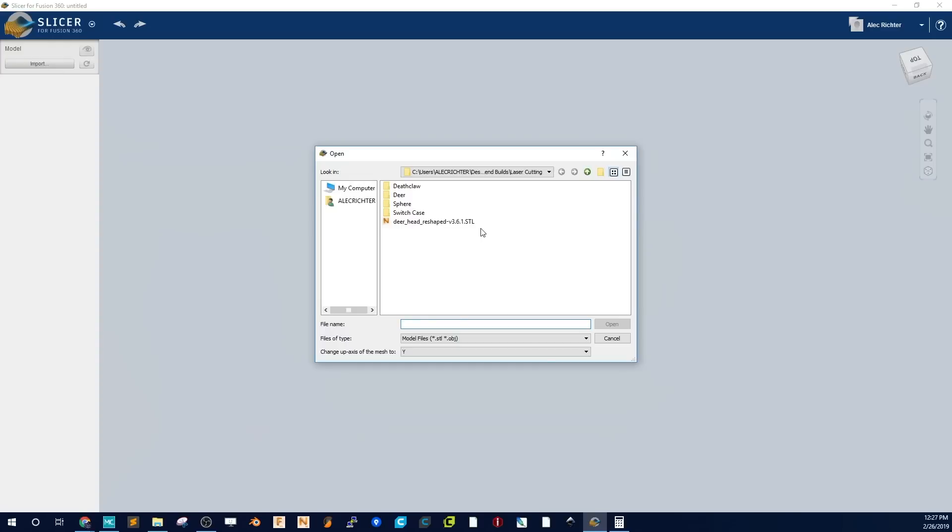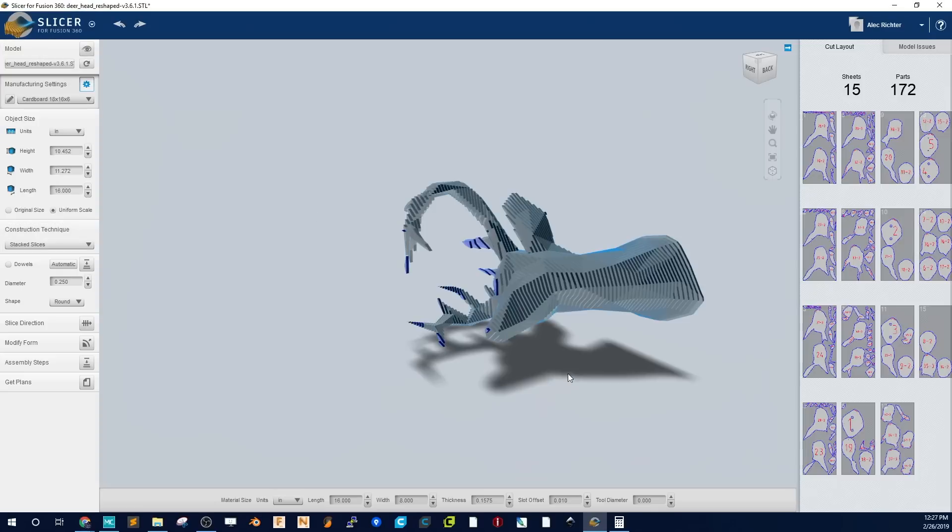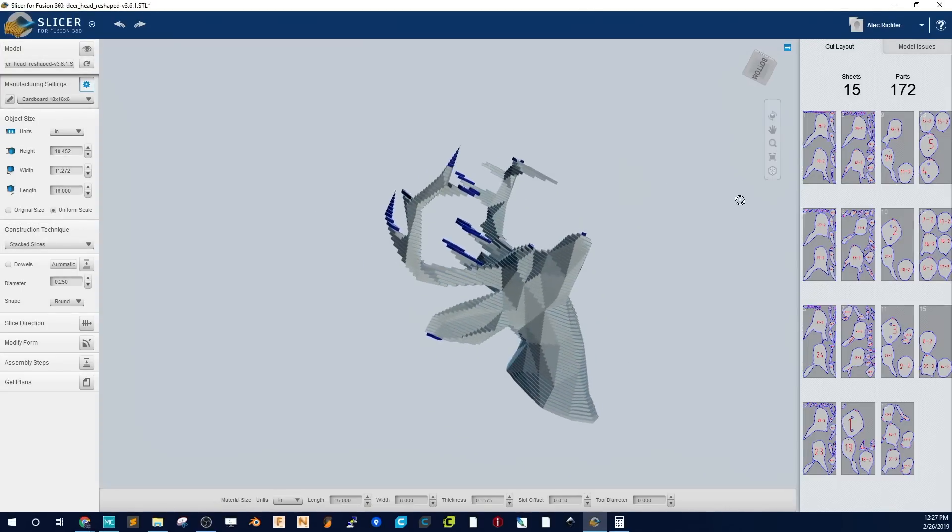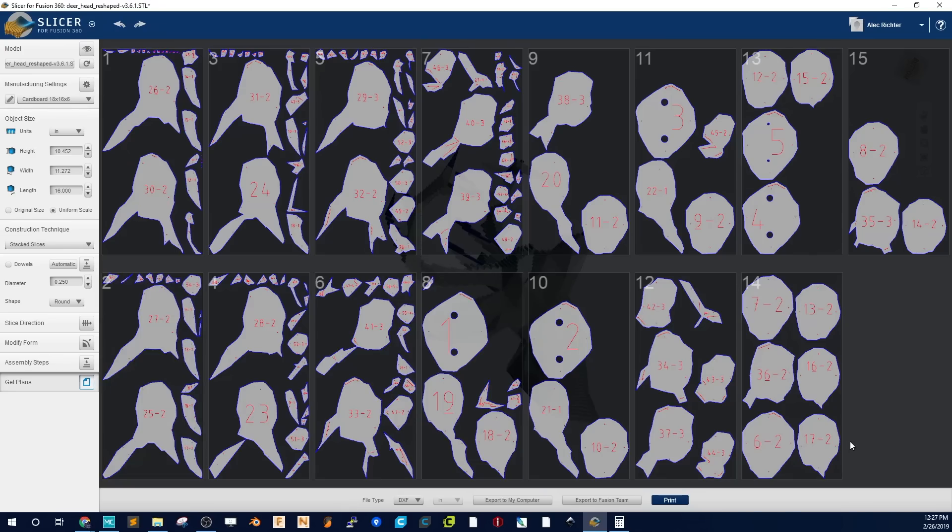Now let's start creating. I brought in the deer head model into Slicer and made sure the cardboard settings were correct in here, and then that was able to process out the cut lines that I needed for this 3D model.